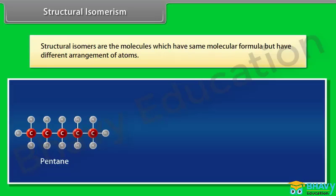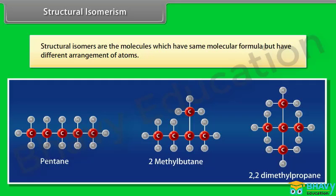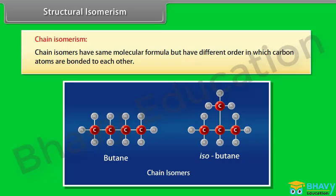Structural isomers are molecules which have the same molecular formula but have a different arrangement of atoms. Chain isomers have the same molecular formula but have a different order in which carbon atoms are bonded to each other.